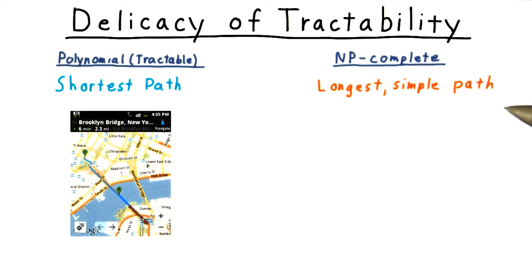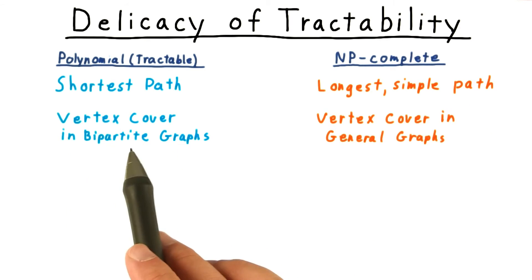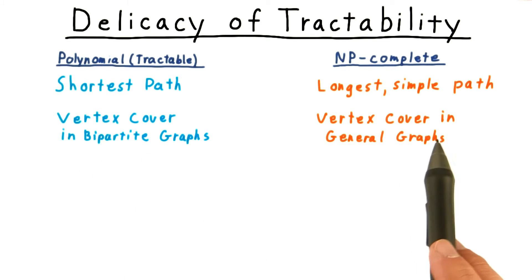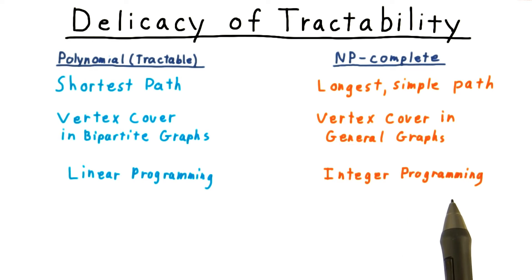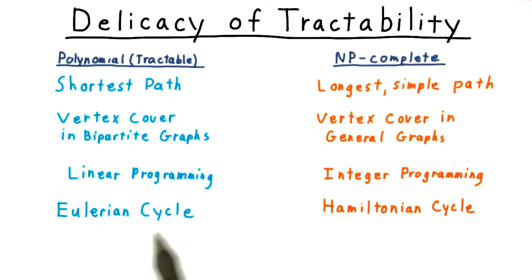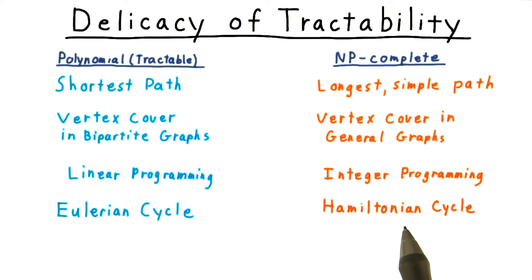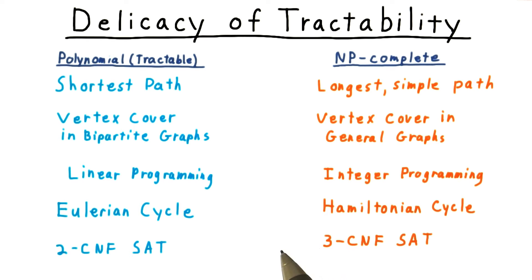This isn't the only possible pairing of similar P and NP-complete problems either — here are some more. If you aren't familiar with these problems yet, don't worry; you'll learn about them by the end of the course. Vertex cover in bipartite graphs is polynomial, but vertex cover in general graphs is NP-complete. A class of optimization problems called linear programming is in P, but if we restrict the solutions to integers, then we get an NP-complete problem. Finding an Eulerian cycle in a graph where you touch each edge once is polynomial. On the other hand, finding a Hamiltonian cycle that touches each vertex once is NP-complete. And lastly, figuring out whether a Boolean formula with two literals per clause is polynomial, but if there are three literals per clause, then the problem is NP-complete.